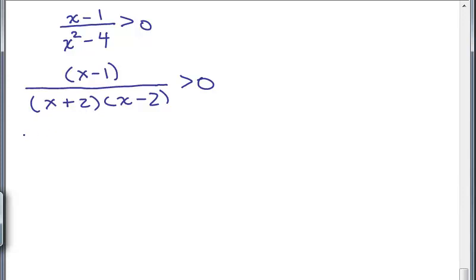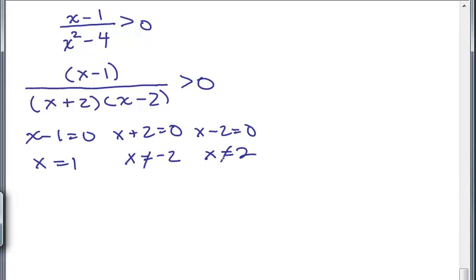Alright, so the critical points, if we just set each of these equal to 0, all the factors, this is x equals 1, x equals negative 2, and x equals positive 2. We automatically know that these are really not solutions.